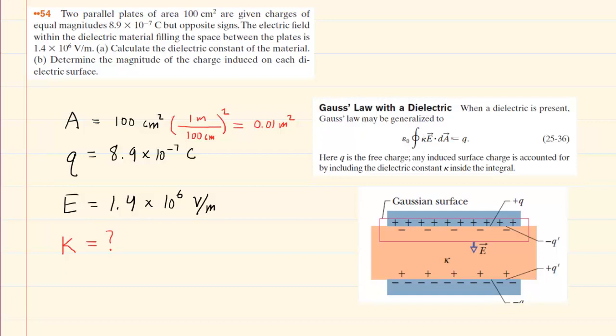So we can see Gauss's law is written as epsilon naught times an integral of kappa times the electric field dot product with the area vector. We'll talk more about that in just a moment. And this will equal q. q is the amount of free charge on the plate.